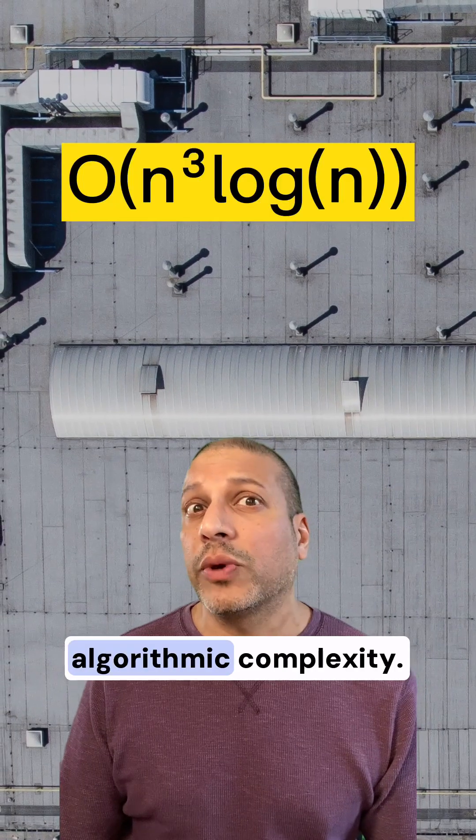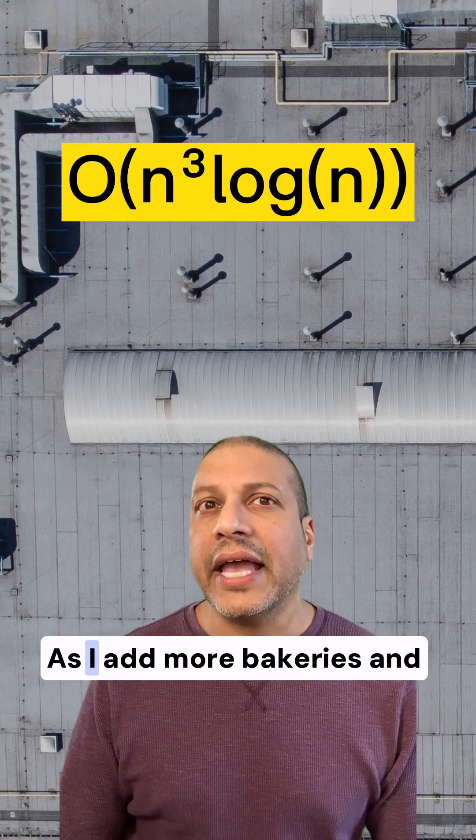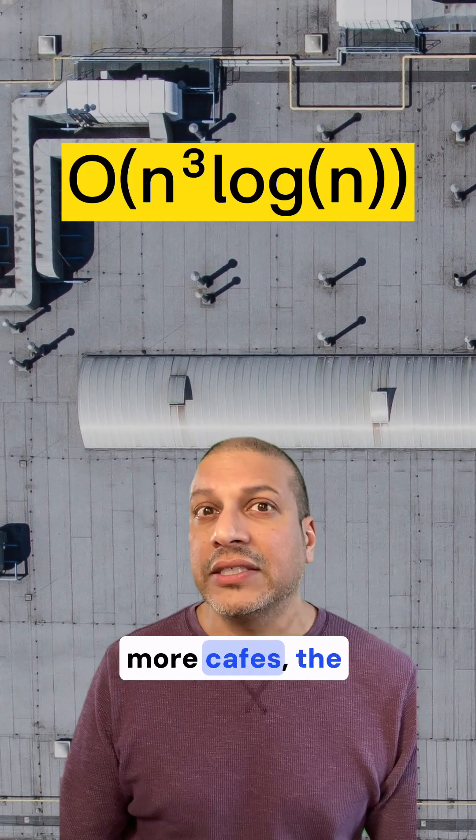The downside of this approach is the algorithmic complexity. As I add more bakeries and more cafes, the computation gets really difficult to calculate.